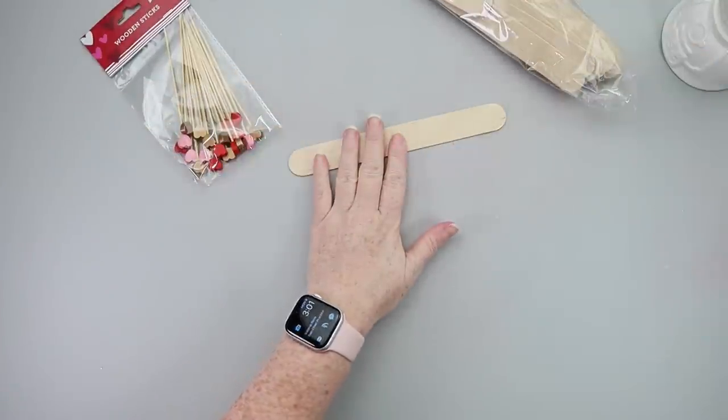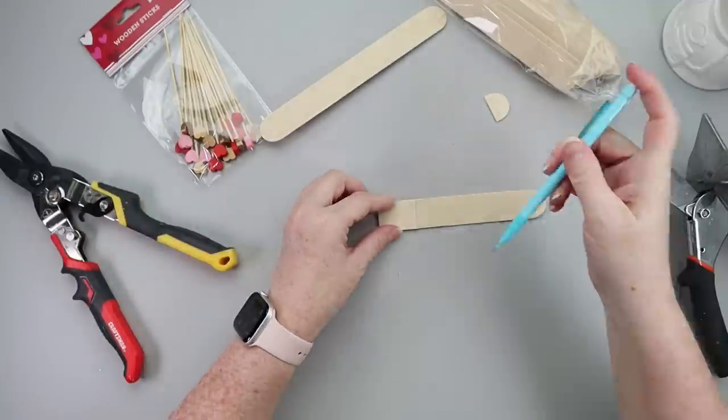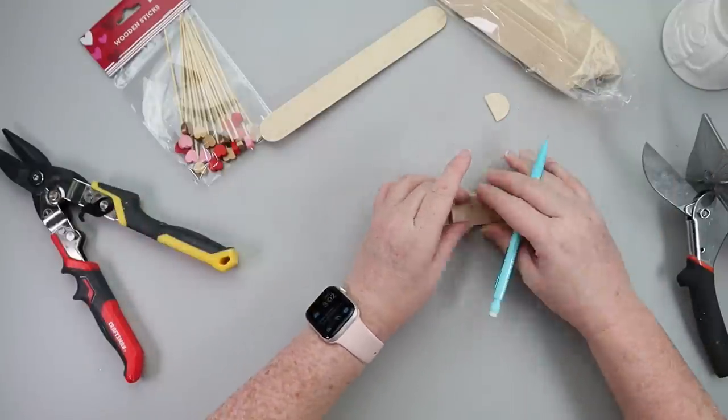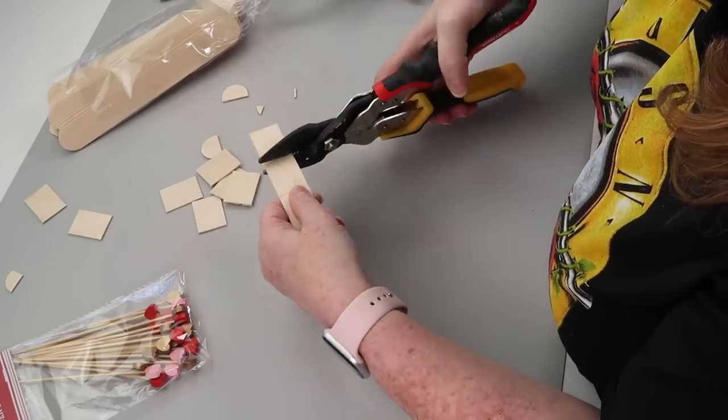You want to start by taking one of the large popsicle sticks and cutting it into rectangles. I'm going to be cutting five out of one popsicle stick.